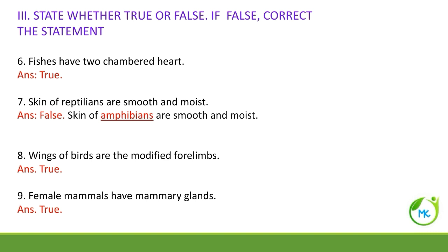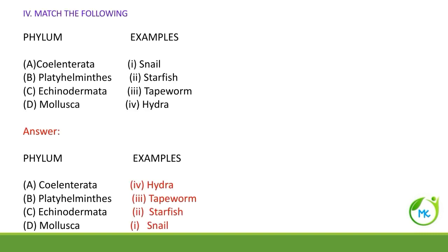Female mammals have mammary glands. Mammary glands are milk-producing glands. Only female mammals will have milk-producing glands, so it is true.